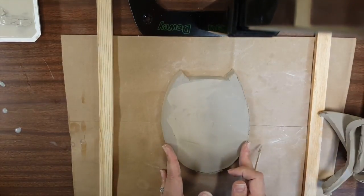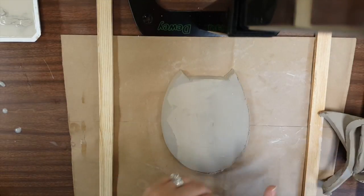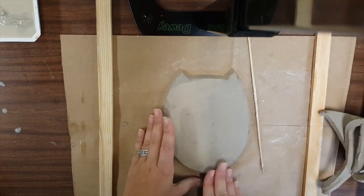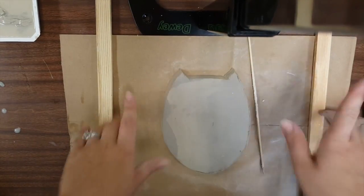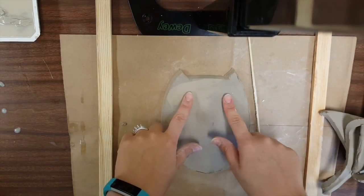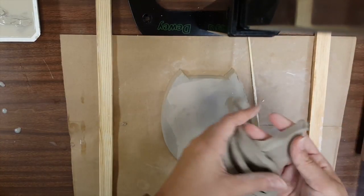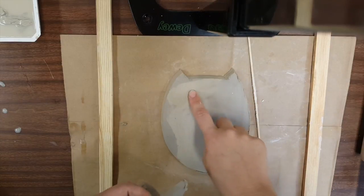You're going to want to start thinking about adding your owl's details. For the eyes, again you have a lot of options. You could carve out eyes, you could attach more clay, or you can draw in or press in details.